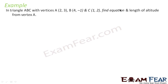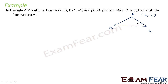The next question: In triangle ABC with vertices A(2, 3), B(4, −1), and C(1, 2), we have to find the equation and the length of the altitude from vertex A. Let's draw this triangle with vertices A, B, and C, and identify the altitude from A to side BC. We need to find the length D and the equation of line AP.